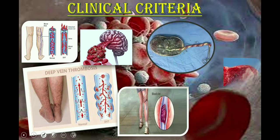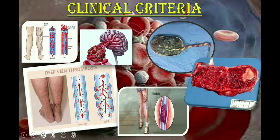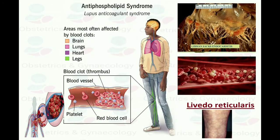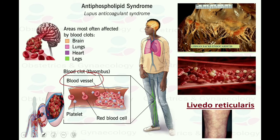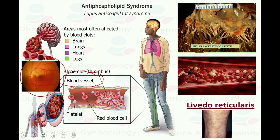When a patient with APS presents, the diagnostic criteria for vascular thrombosis requires one or more episodes of arterial, venous, or small vessel thrombosis in different parts of the body, including the brain and the eyes. The patient may present with amaurosis fugax, retinal thrombosis, and similar conditions.